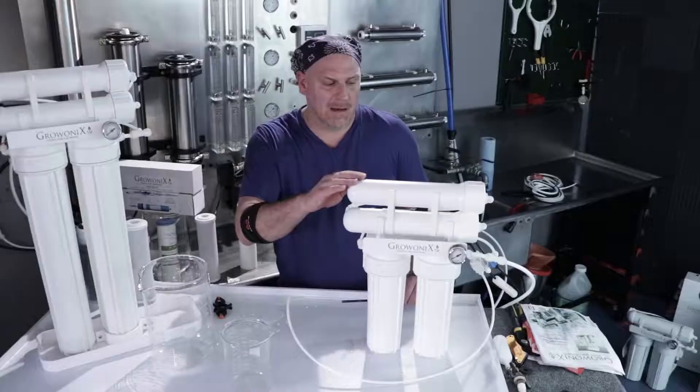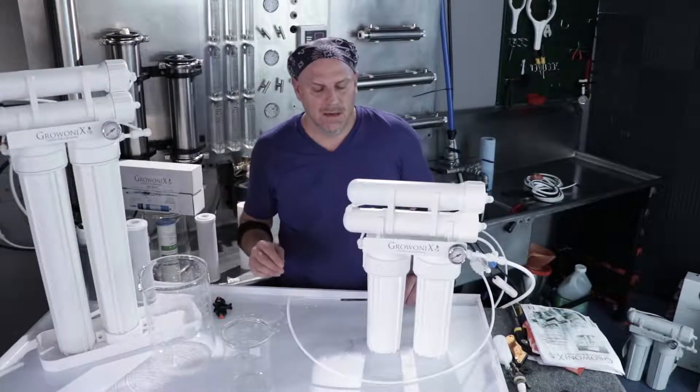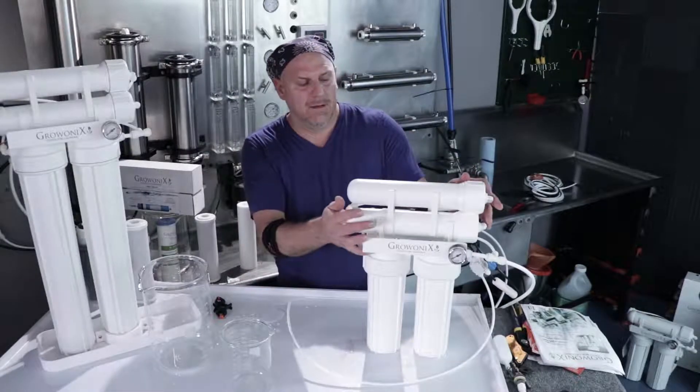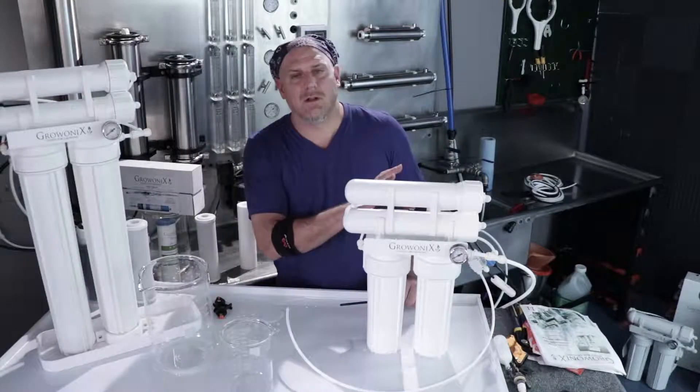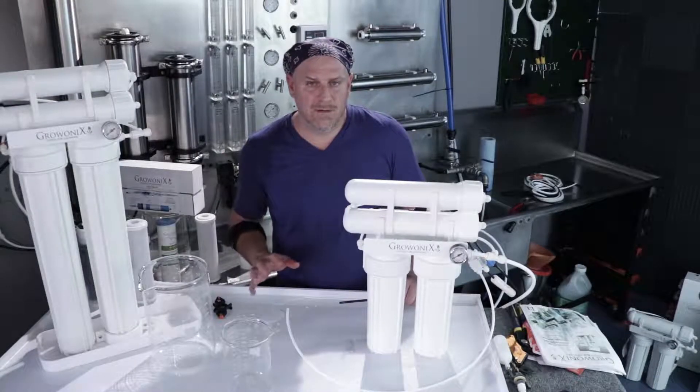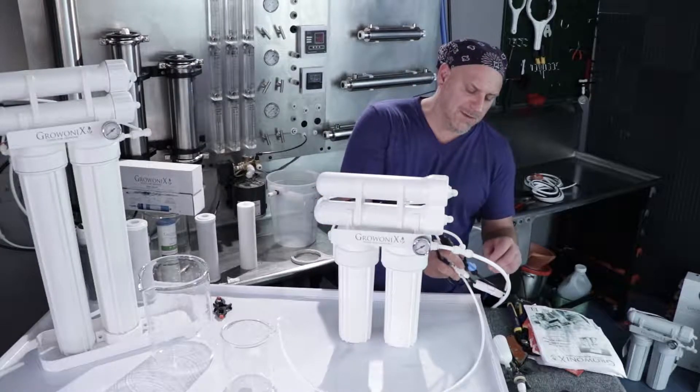Now we're going to flush the membrane. The membrane housing has not had water in it yet, so we've got to purge all the air out of it and flush the storage solution out of it. There's a glycerin-based storage solution in it, food grade, and we want to flush it all out before we use this water.